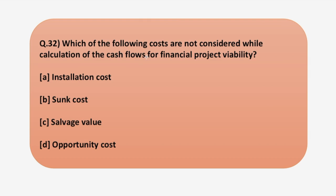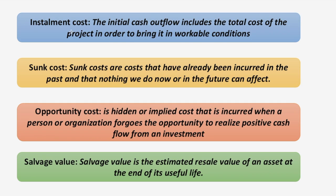Moving on to the next question: which of the following costs are not considered while calculating cash flows for financial project viability? In financial management while analyzing a project, some costs are included to analyze viability and some are not. The first is installation cost — the initial cash outflow which includes the total cost of the project to bring it to workable conditions. For example, if a factory purchases machinery, the installation cost or transportation cost may be considered as this initial cash outflow and must be included in the calculation of cash flows.